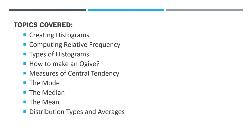Next, we're also going to talk about computing relative frequency, the types of histograms, and how to make an ogive — there's a proper way to pronounce that, we'll learn it later. We'll also cover measures of central tendency: the mode, the median, and the mean, and the different distribution types and averages. Hopefully we'll upload videos on how to create histograms quickly using Excel and other statistical software.